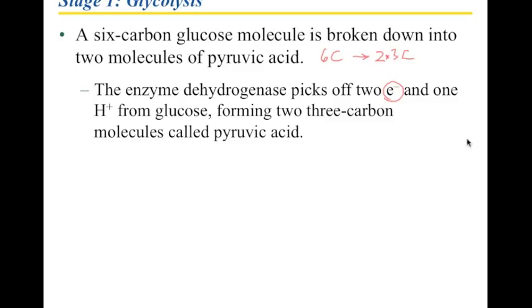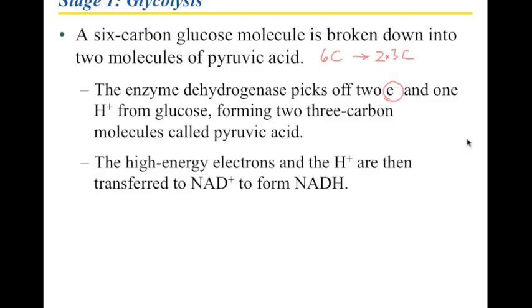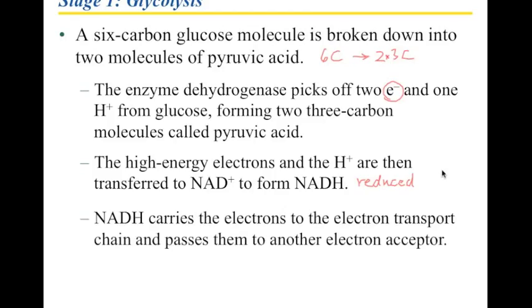The glucose falls apart and two molecules of pyruvic acid are the result. The high-energy electrons and the hydrogen move to this electron acceptor, this electron carrier device, the NADH. The NADH receives these electrons so it is being reduced, and I want to make sure I carry that forward so you can see that we are working with a redox reaction here. You have the glucose getting oxidized and the NAD+ is being reduced. This NADH is going to be able to carry the electrons to the electron transport chain, and we'll deal with that one later.